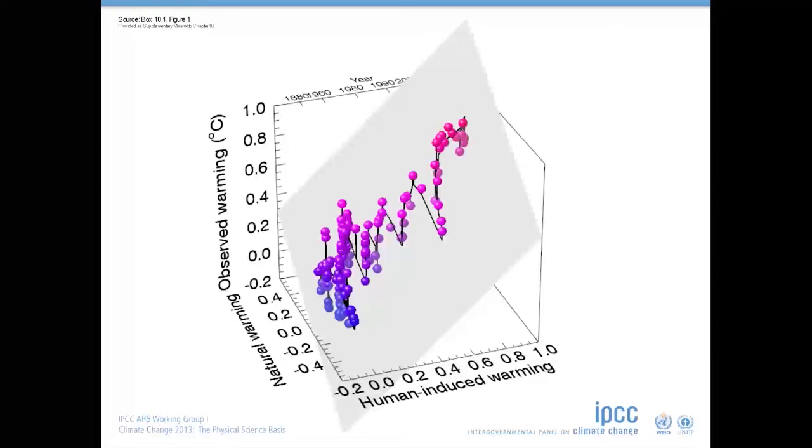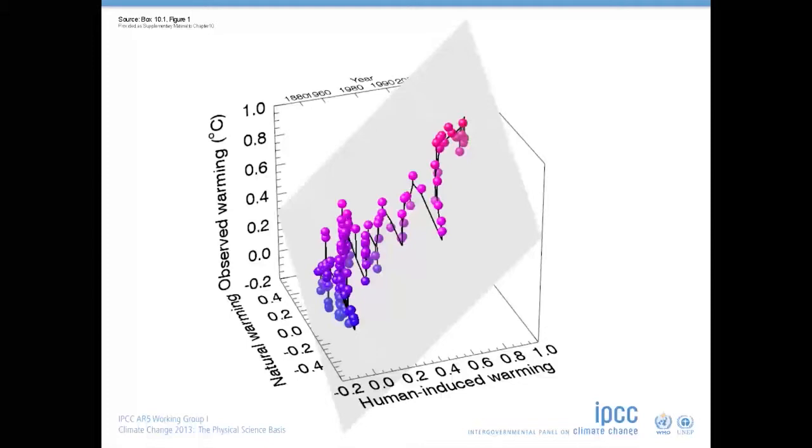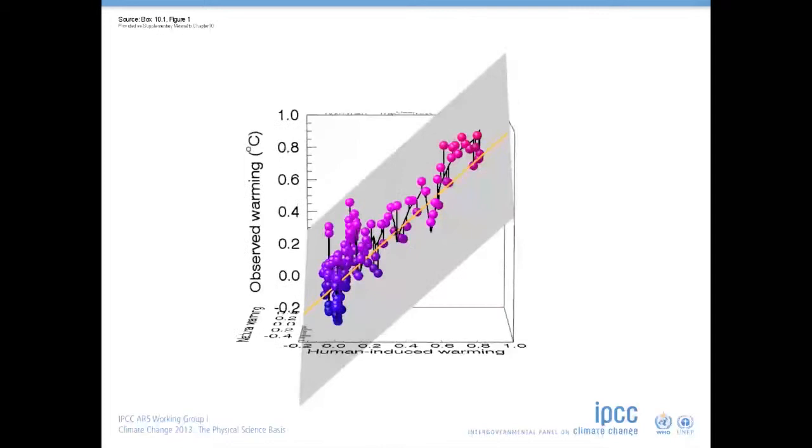We assess uncertainty in this slope by varying the position of the surface, like this, to see how this changes the average distance of the surface from the points, indicated by the length of those little pins. The size of the best fit human influence is shown by the slope of the best fit surface in that direction.